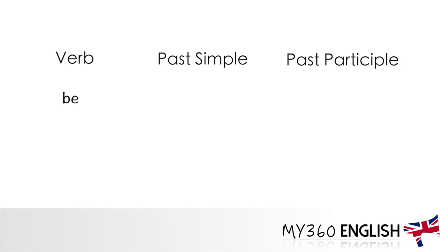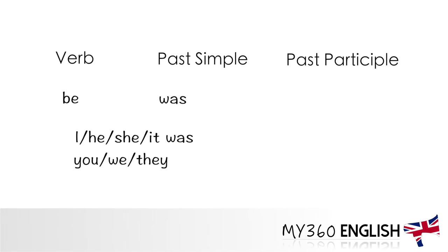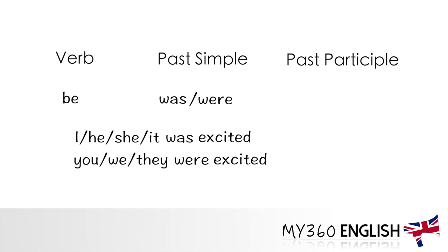Let's start with the verb 'to be'. This is the only irregular verb which is super irregular and has two different versions of the past simple. If we want to use I, he, she, or it, we use 'was'. Or if we want to use you, we, and they, we use 'were'. So we have 'I was excited', 'he was excited', 'she was excited', 'it was excited', 'you were excited', 'they were excited'. And the past participle is 'been' — 'he's been good'.